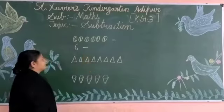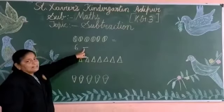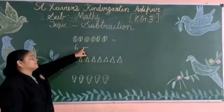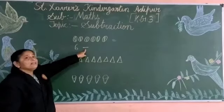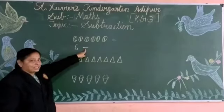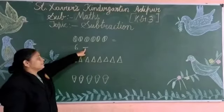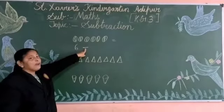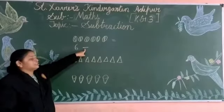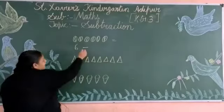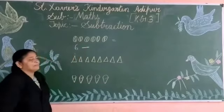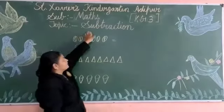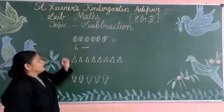Minus. What is this? Yes, this is minus. Minus means the sign of subtraction. Okay students? This is the sign of subtraction. Subtraction ki sign hai. Yeh less karne ka, minus karne ka sign hai. Abhi how many balls are here? 6 balls.